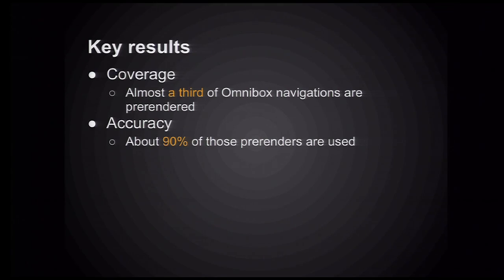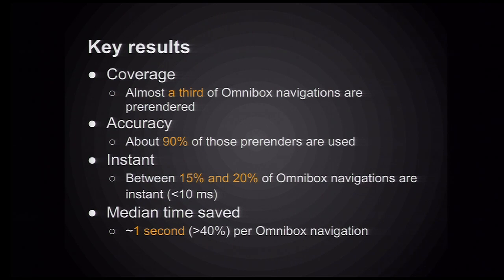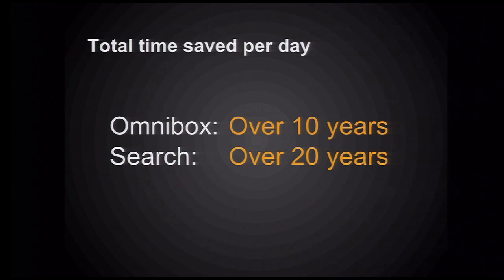Some key results that we found since we launched this: we launched Omnibox pre-rendering a few versions ago and rolled it out as an experiment — it was very positive, so we've now rolled it out fully. It turns out that about a third of Omnibox navigations end up being pre-rendered. 90% of those end up being used, which is a statistic that we're quite proud of because accuracy is very important. Between 15 and 20% of those navigations end up being instant — less than 10 milliseconds — and we end up saving about a second per Omnibox navigation. When you add this up across all of our users, we find that we end up saving a massive 30 years across Omnibox and Search every day for people browsing the Internet.